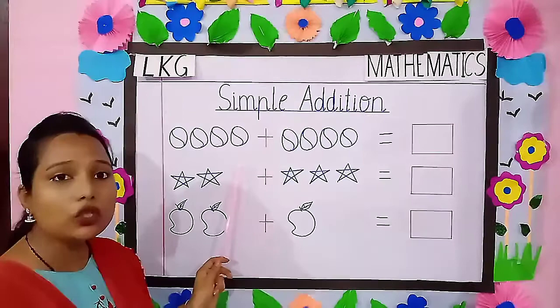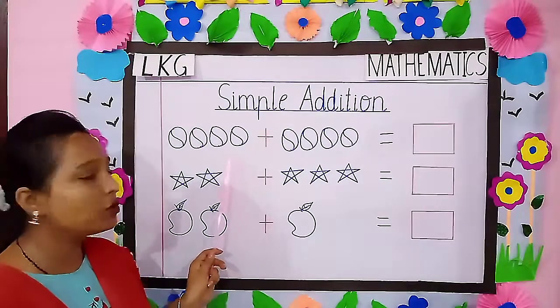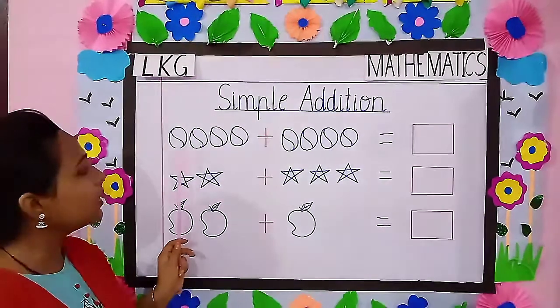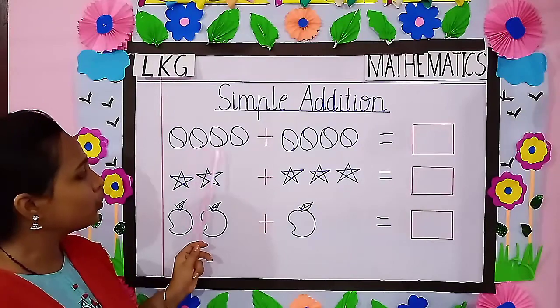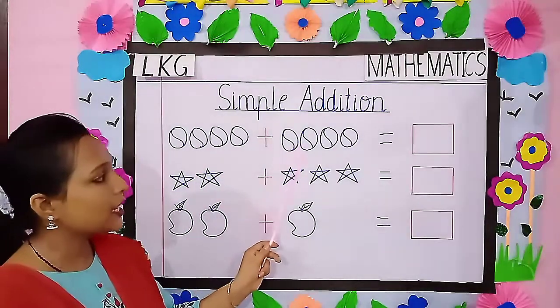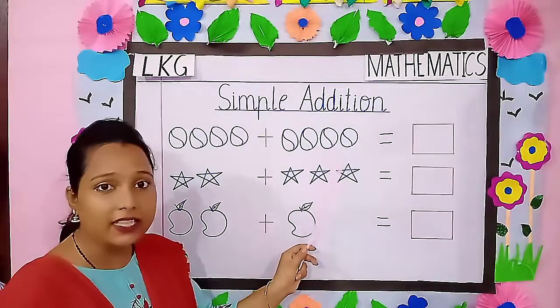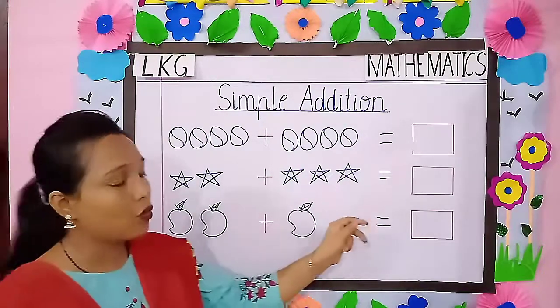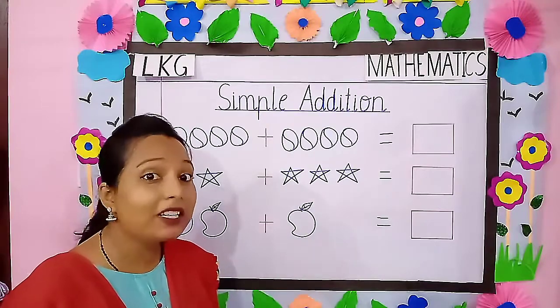How many balls are there all together? Come on, count with me. 1, 2, 3, 4, 5, 6, 7 and 8. Now we have to write here. Which number?